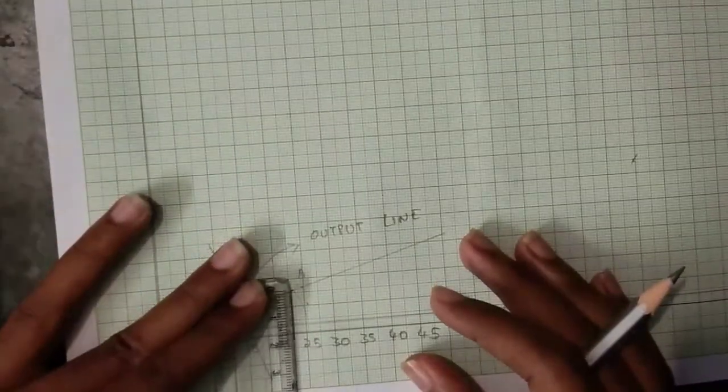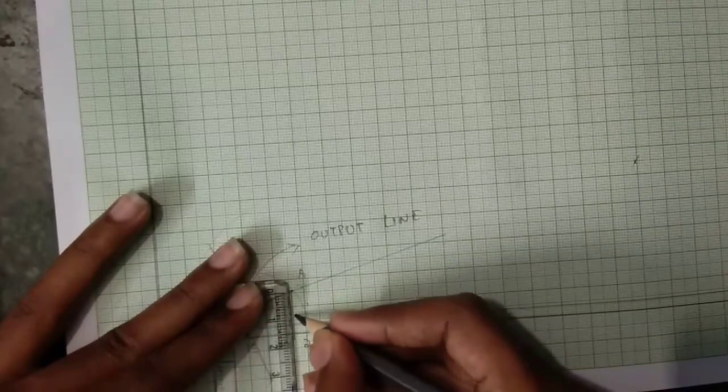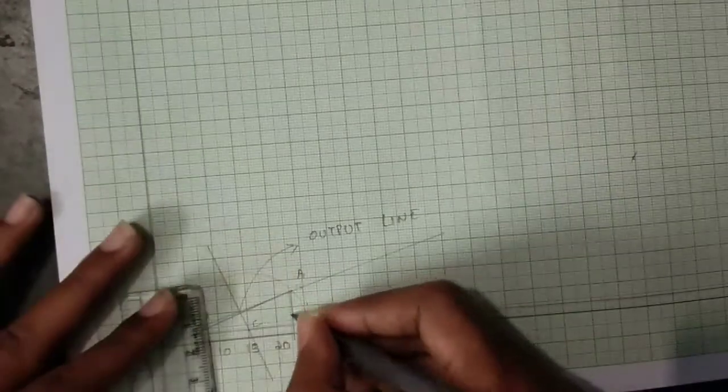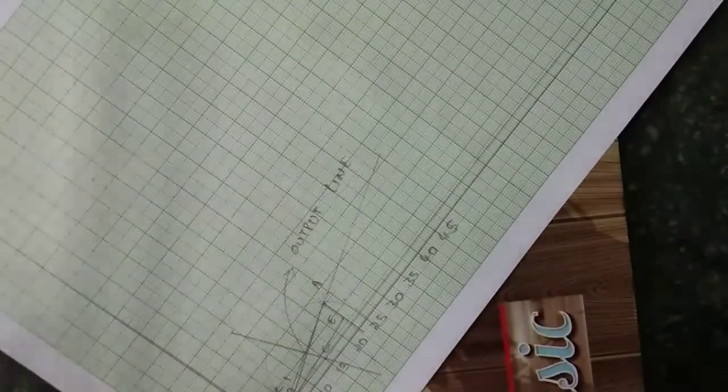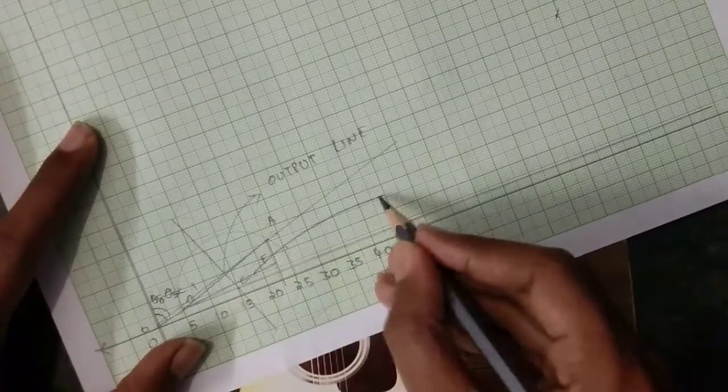I am taking 0.9 as E. Now join O' and E. This one is a torque line.